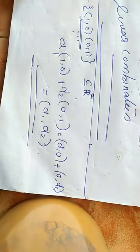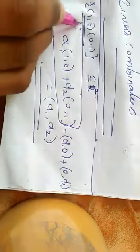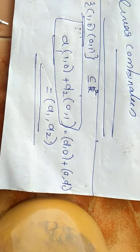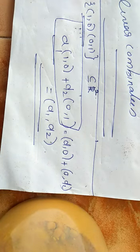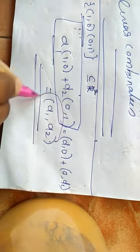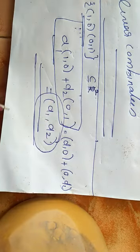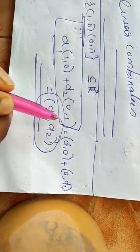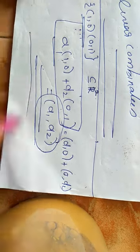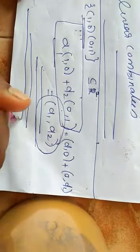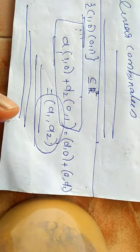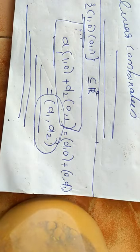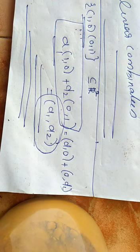This combination is called the linear combination of (1,0) and (0,1). So you take some vectors, you take some scalars, and you write down the linear combinations. That is called a linear combination.